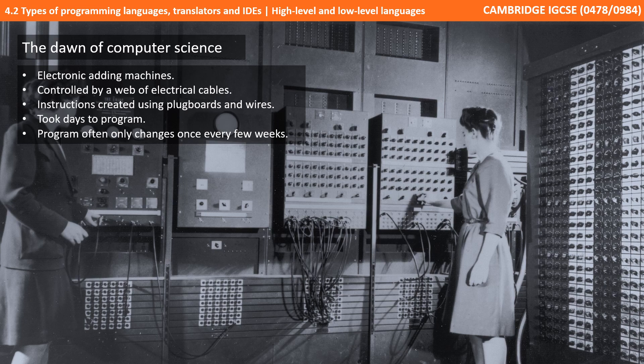Back at the dawn of computer science, computers were vast machines that filled entire rooms. They were better referred to back then as electronic adding machines, and they were controlled by a web of electrical cables. The actual instructions that made up a program were created by using plug boards and wires, and it took days to create a single program.